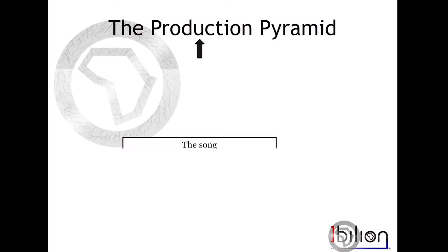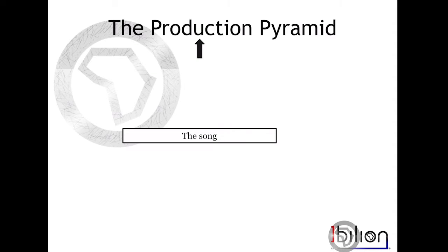To introduce you to the record production process, I'd like to talk about the production pyramid. In the record production pyramid, everything starts with — can you guess it — the song. The song is where everything starts. When you're going to record something, you need to make sure that the song is the best it can possibly be, written beautifully, and of course depending on the style, the type of song is going to vary.